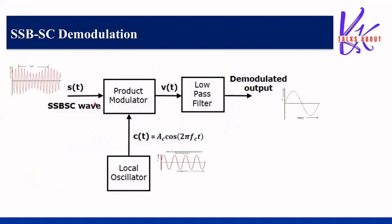For demodulation, the modulated wave s(t) — whether upper or lower sideband — is given to a product modulator along with a carrier wave Ac·cos(2πfct) that is synchronous with the SSB wave. The output is then passed through a low-pass filter to recover the demodulated signal. This is the demodulation process for SSB-SC.